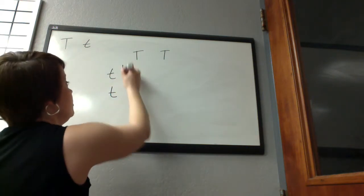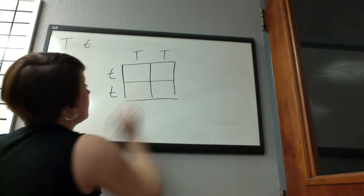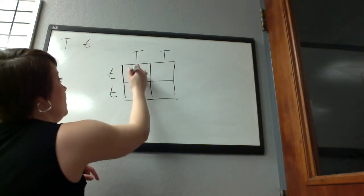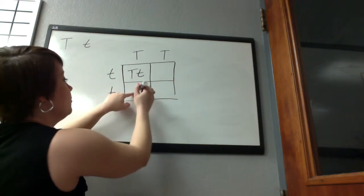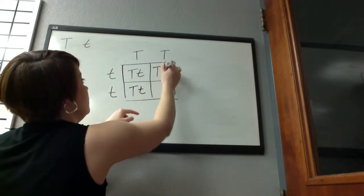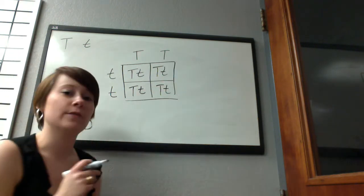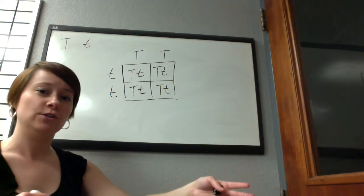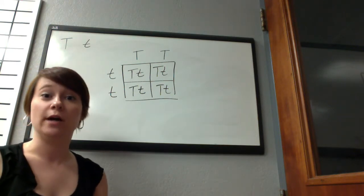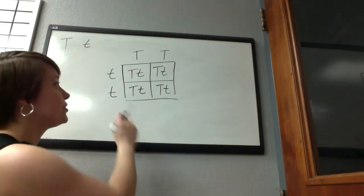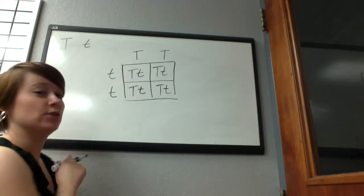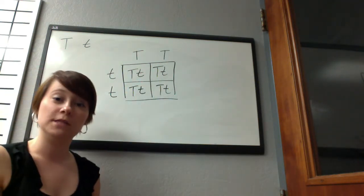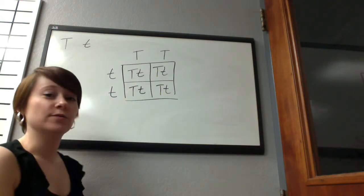You draw a square with one parent on top and the other parent on the side, then combine the alleles. Each parent has two alleles and donates one to each offspring, so the child gets one from each parent and ends up with two. When you cross this homozygous dominant and homozygous recessive, you end up with all heterozygous plants. So the phenotype for all of these offspring would be tall, but the genotype is that they're all heterozygous.